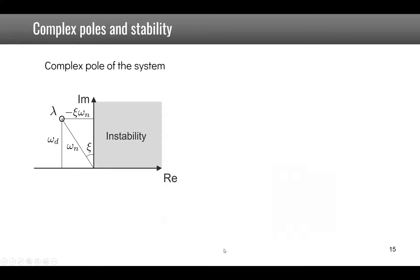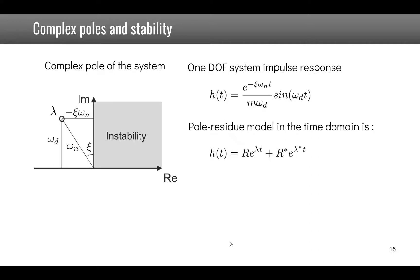Now if we look at the impulse response of a system it can also be given by a pole residue model where you see that you have the residue times e to the power of the pole times t and the complex conjugate here.